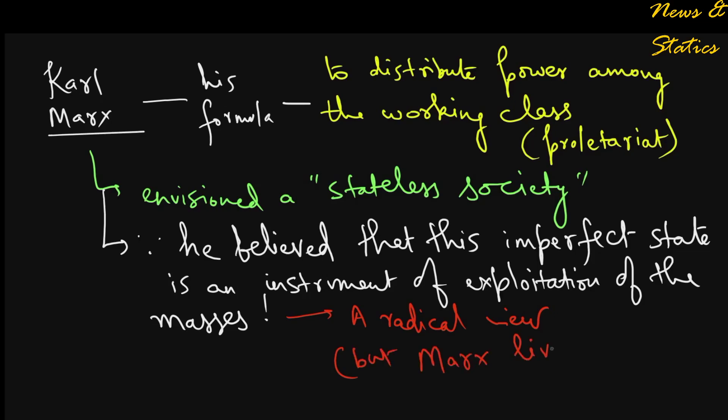But then every man is a child of his times, and so was Karl Marx, who saw the exploitation of workers by factory owners right in the height of industrial revolution. Karl Marx desired a society wherein exploitative power ceased to exist.